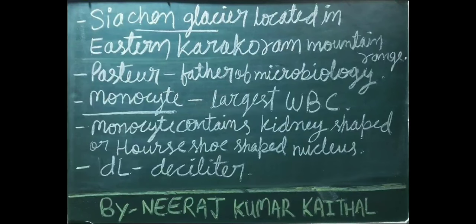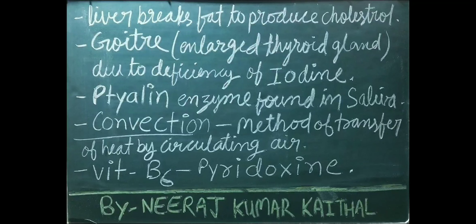Siachen glacier is located in the eastern Karakoram mountain range. Pasteur is known as the father of microbiology. Monocytes are the largest WBCs and contain a kidney-shaped or horseshoe-shaped nucleus. DL stands for deciliter. The liver breaks down fat to produce cholesterol. Goiter is an enlargement of the thyroid gland due to iodine deficiency. Ptyalin enzyme is found in saliva. Convection is a method of transfer of heat by circulating air.